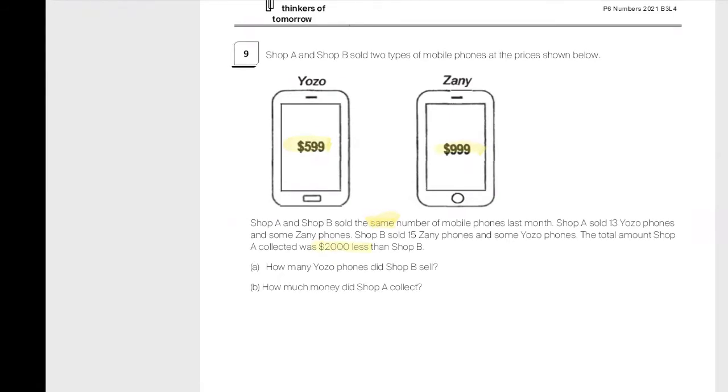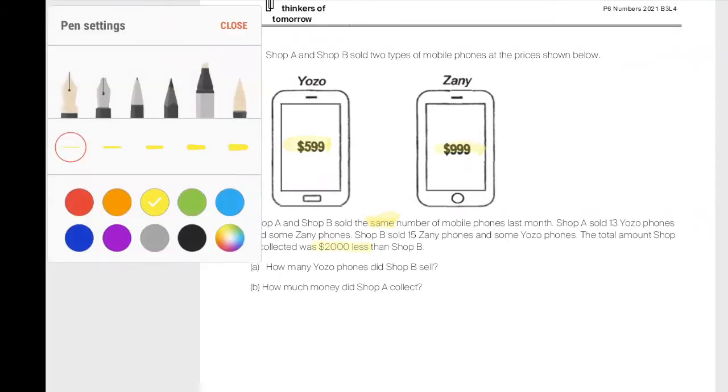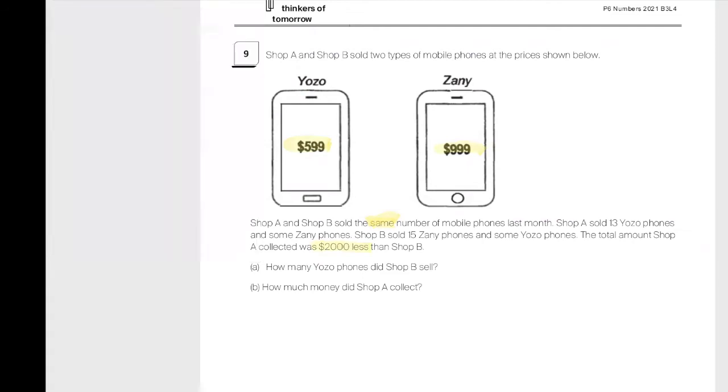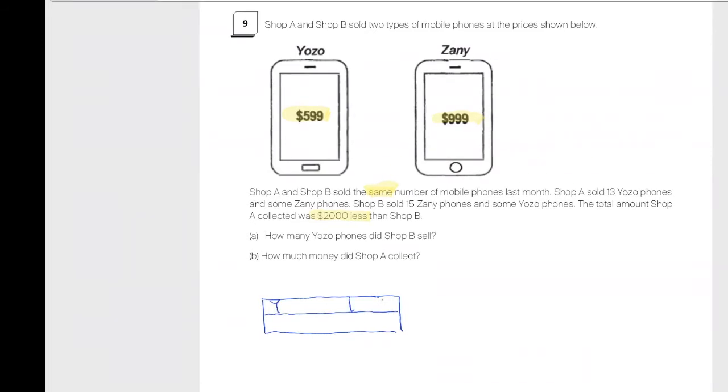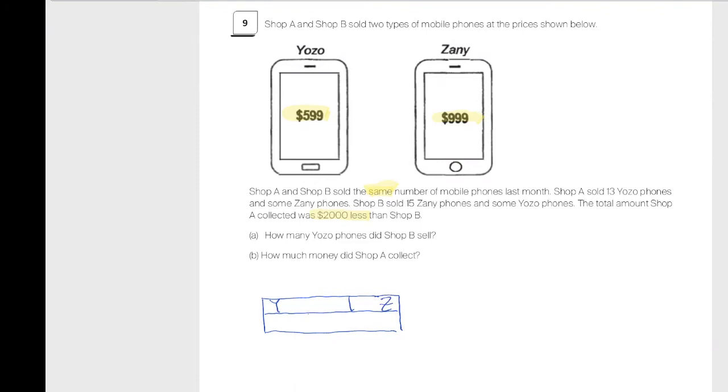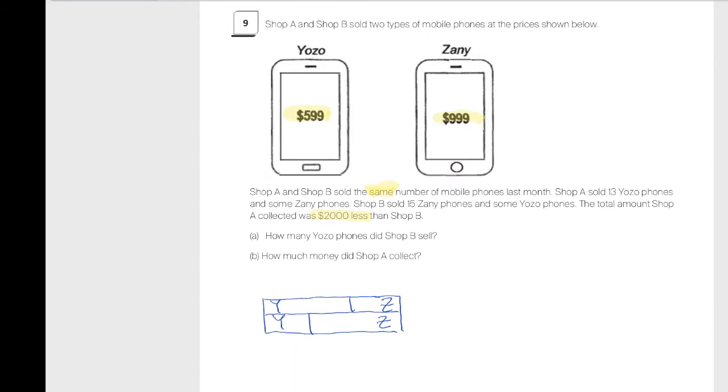I'm going to draw a very simple model. Since they bought the same number of phones, I'm going to draw a simple model. This is going to represent the same number of phones. So someone is going to sell more Y and someone is going to sell more Z.